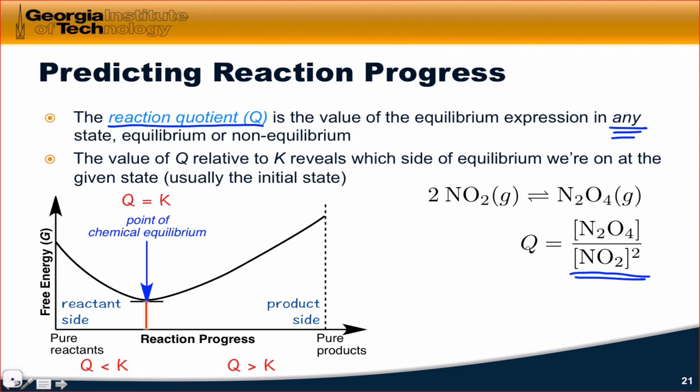For example, if we calculate Q and Q is greater than the value of Kc, then we know we're somewhere on the product side of the equilibrium, such that the reaction will move in reverse. The rate of the reverse reaction will be faster than the rate of the forward reaction until we reach a point of chemical equilibrium.